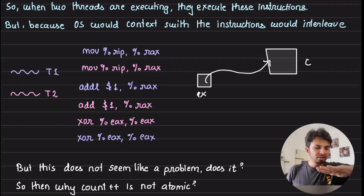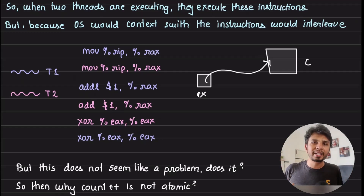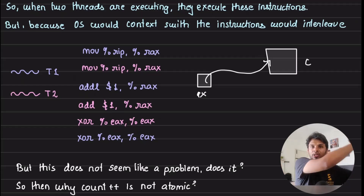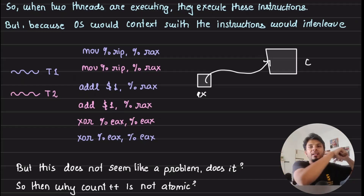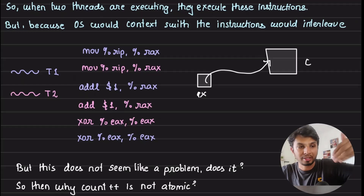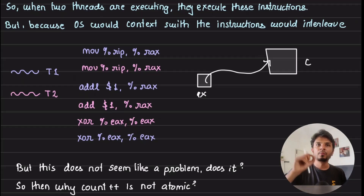Thread one comes in and loads the address of the global variable count into rax. Now let's say a context switch happens with another thread executing the same thing. During a context switch, all the values of all registers are stored in the thread state on the CPU. When the CPU does a context switch it saves all register values, so when the thread resumes it offloads those values back onto the registers and can resume exactly from where it stopped.